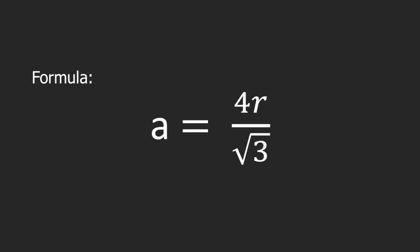To solve for the edge length of a BCC unit cell, we will use a very simple formula: a equals 4r divided by square root of 3. A is the edge length, and r is the radius of the atom.